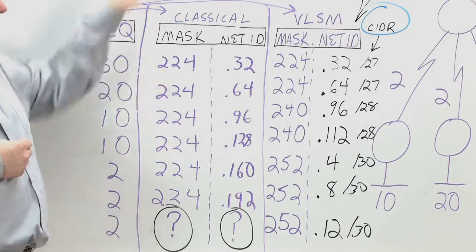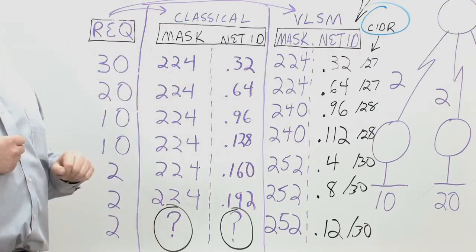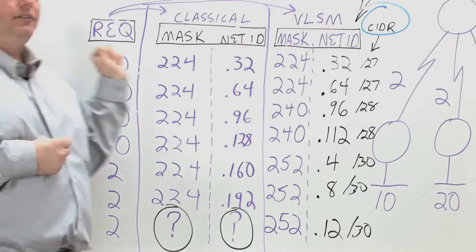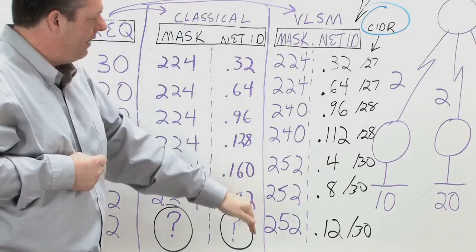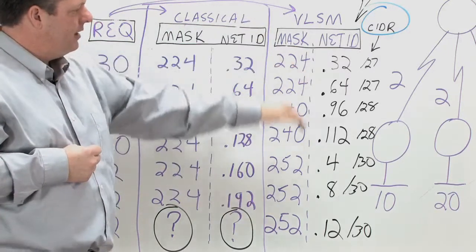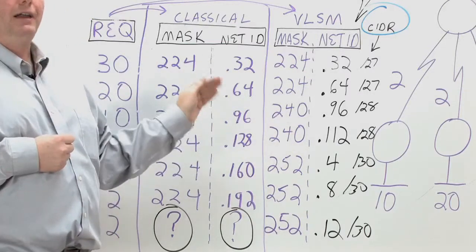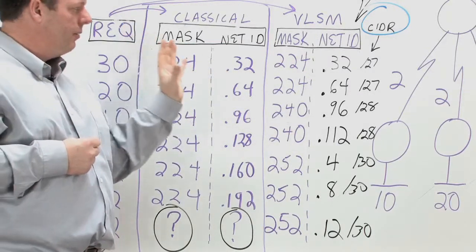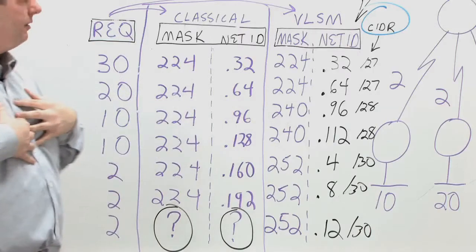To solve that problem by right-sizing your network, you're taking the masks and you're taking the network IDs and you're only applying what you need. Again, the best practice approach that I use is to sort our requirements greatest to least,